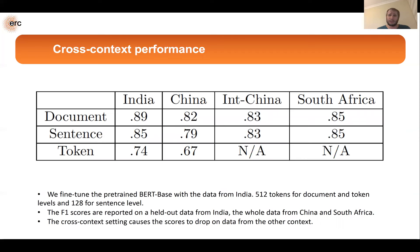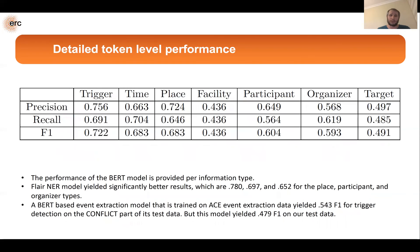For cross-context performance, when we train our models on India data and test them on China or South Africa, there is a drop in performance, but we can measure it now and work on improving it. The token-level performance shows that trigger detection is quite good because we are optimizing for it. For other types, we tested a named entity recognition model and scores are better, while the ACE conflict category scores lower, showing its limitation for this domain.